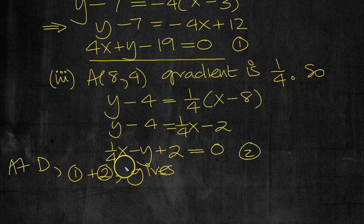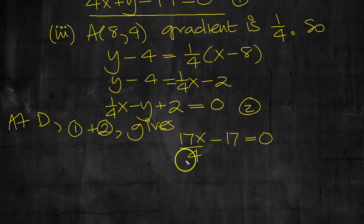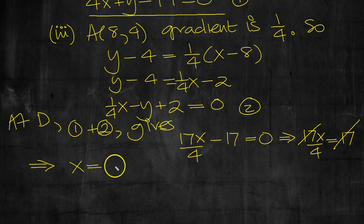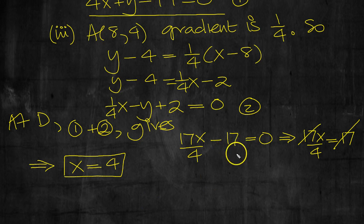We get 4X plus one quarter X is 4 and a quarter, which is 17X over 4. The Ys cancel. Minus 19 plus 2 is minus 17. So the 17s will cancel. That tells us then that 17X over 4 equals 17, and we can cancel by 17 both sides. Move the 4 up, so X is 4.